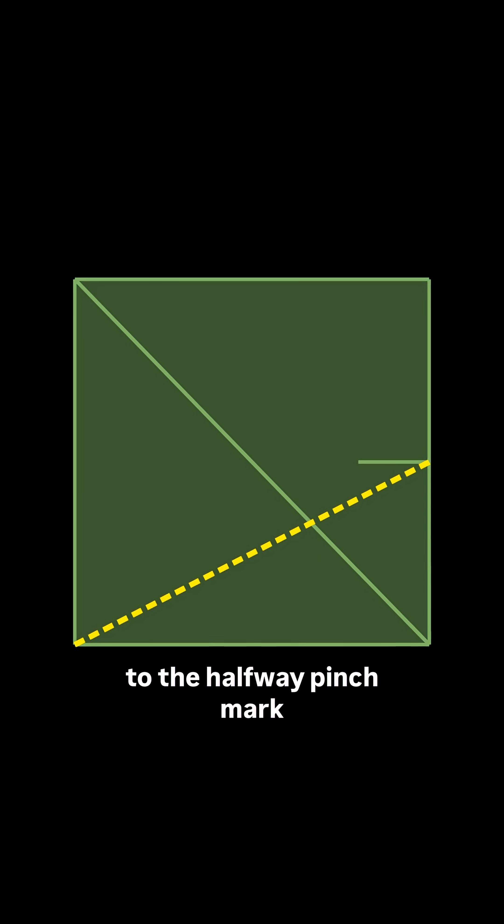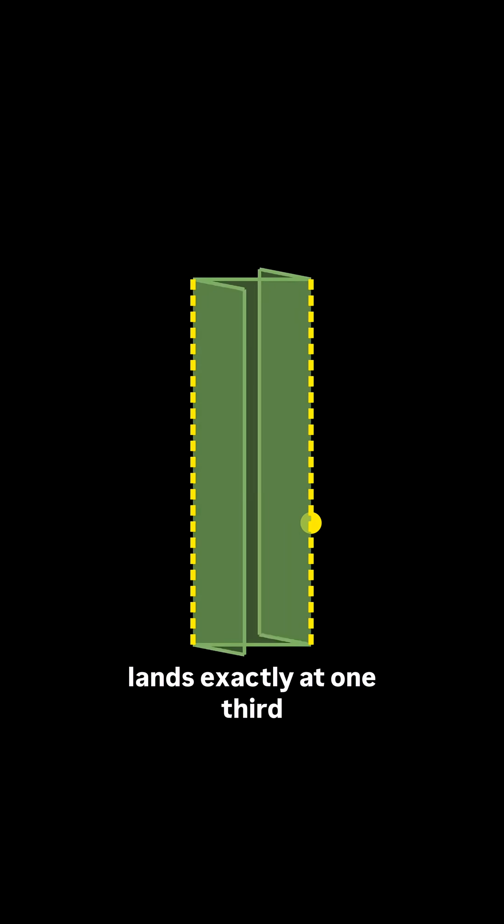To fold a paper into thirds, we first pinch this right edge in half, then fold diagonally, and then fold a line from the bottom corner to the halfway pinch mark. And the intersection of those two creases lands exactly at one third.